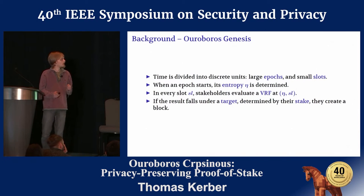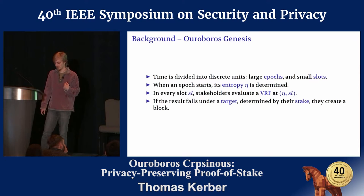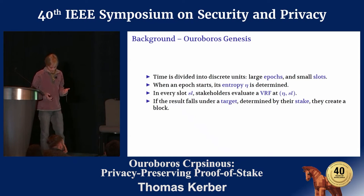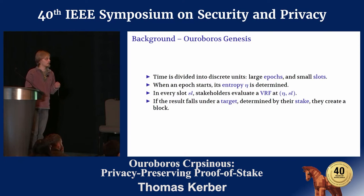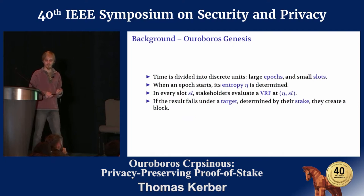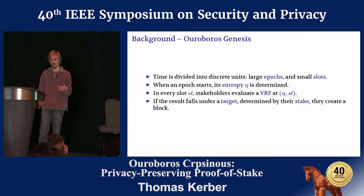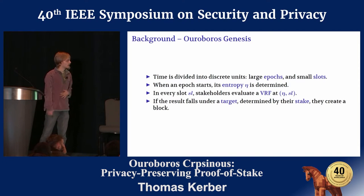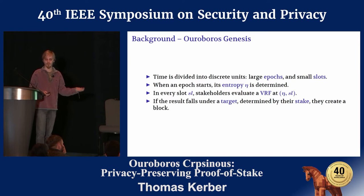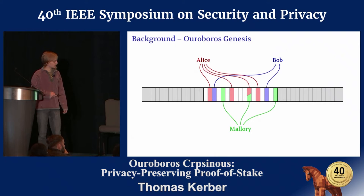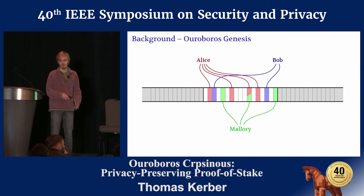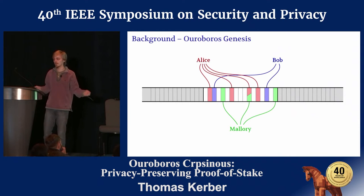I need to give background on both Ouroboros Genesis and Zerocash. Ouroboros Genesis divides time into large units called epochs and small units called slots. During each epoch there is some entropy which comes from somewhere — I will not go into that here. For every slot, if you want to create a block, you evaluate a verifiable random function at the slot number and the epoch entropy. If this evaluation falls under a target, you get to create a block, and what target you have depends on how much stake you have. An execution may look like one epoch where various users create blocks in various slots, some slots have no eligible users, and some have multiple.